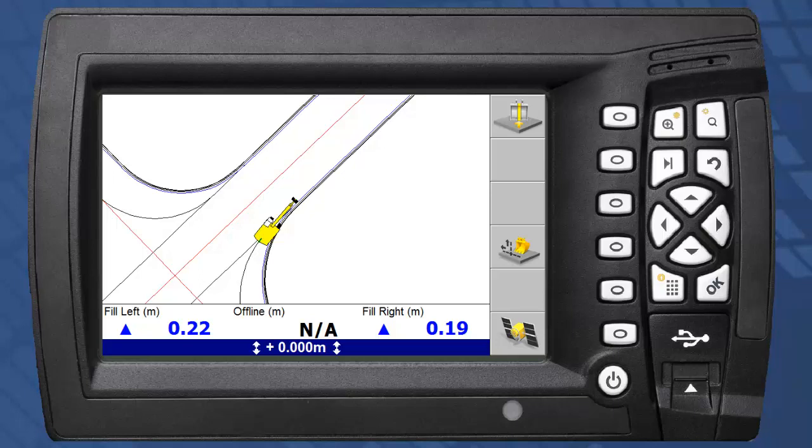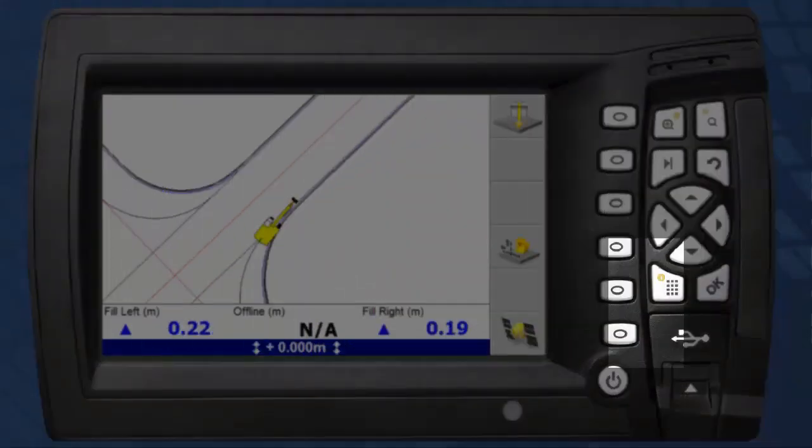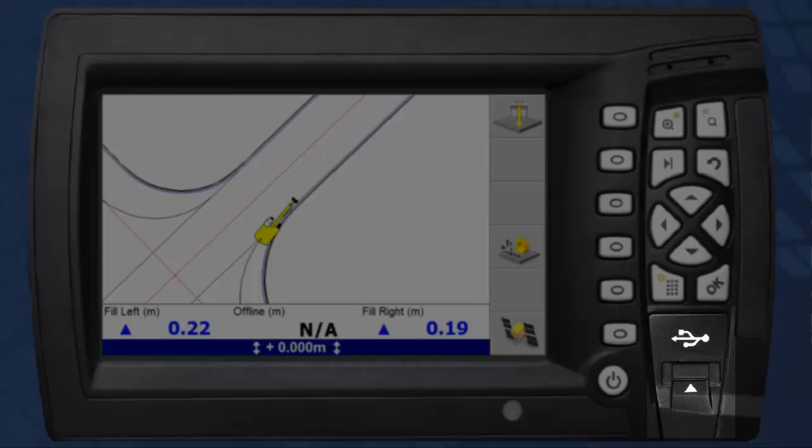The layout of the control box includes the screen, software keys, navigation keys, power button and USB interface.